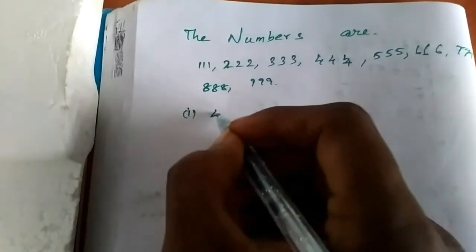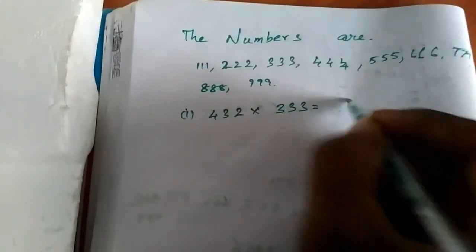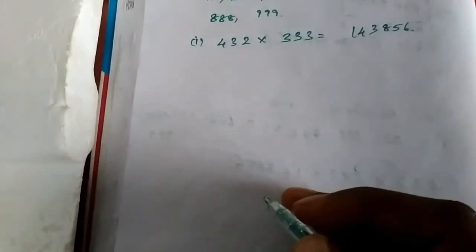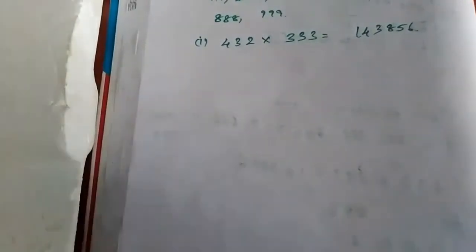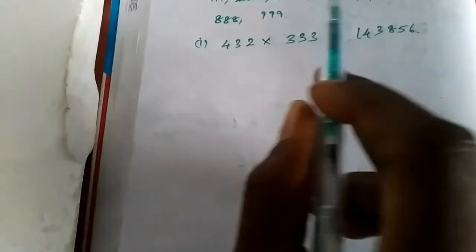For example one: four, three, two into three, three, three. The answer is one, four, three, eight, five, six. Step by step solve. First step — this is a two-digit and three-digit number. You can see the two-digit number is placed both left and right.